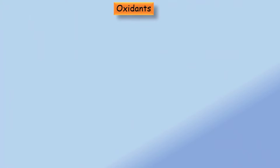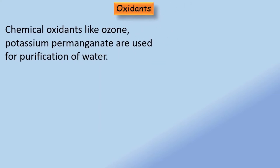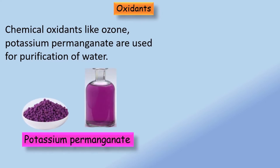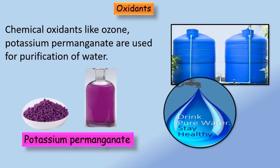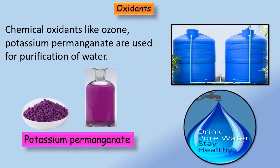Oxidants or oxidizing agents are also used in our day-to-day life for various purposes. Oxidants like potassium permanganate and ozone are used during cleaning of water tanks. Some oxidants are also used for purification and disinfection of drinking water before supplying it to houses and industries.